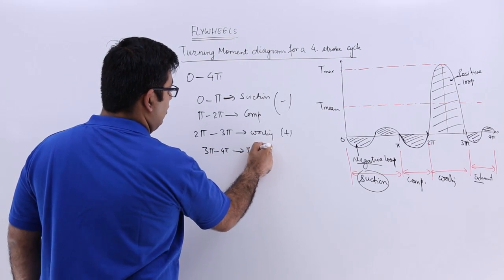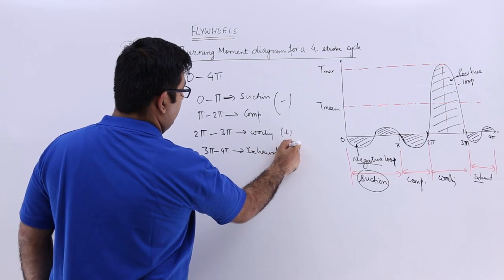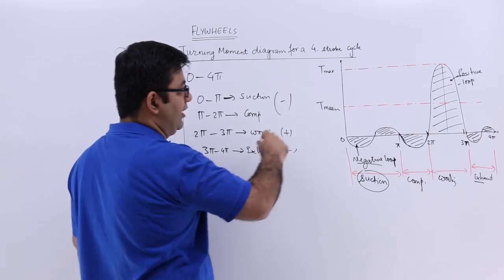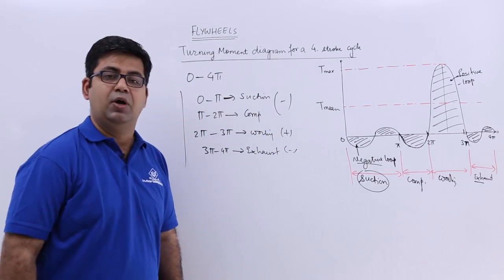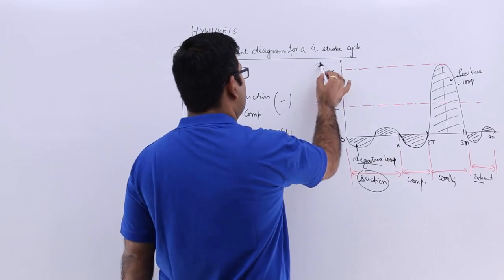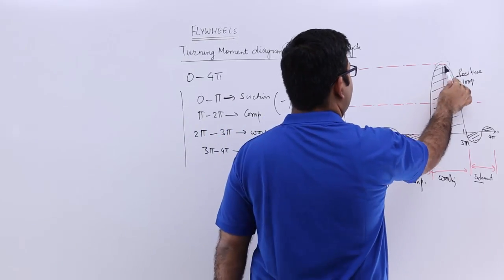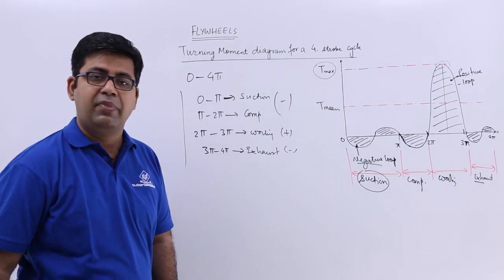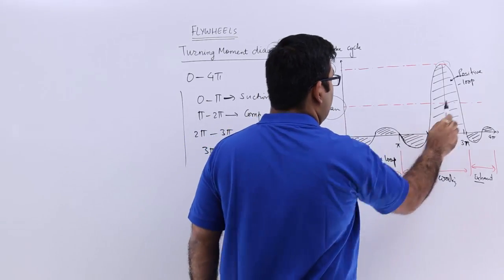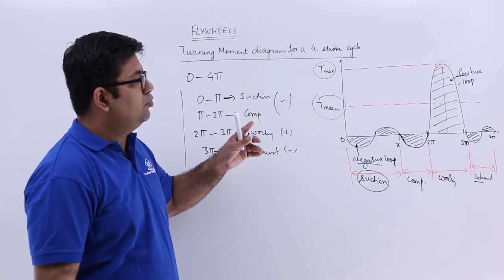You can see that there is a fluctuation in the energy or the torque which is produced. There is a maximum torque which is achieved in the working stroke, and there is a mean value—this is the mean value.